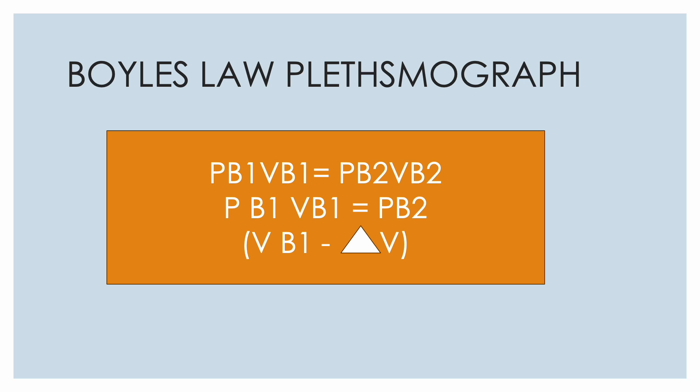So how do we do that? We apply Boyle's law to the plethysmograph and we also apply Boyle's law to the lung of the patient. So here if Pb1 is the pressure which was in the plethysmograph in the beginning which we can measure, Vb1 is the volume in the plethysmograph which we can measure in the box, Pb2 is the final change in the pressure.